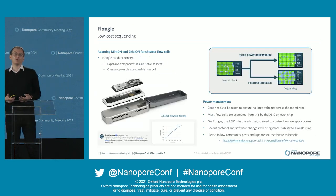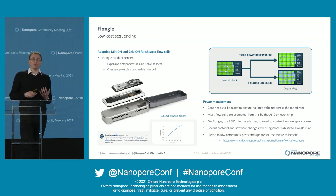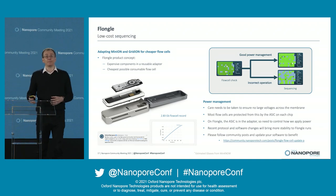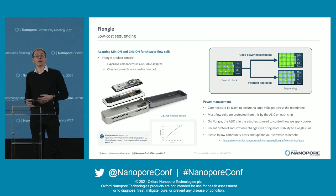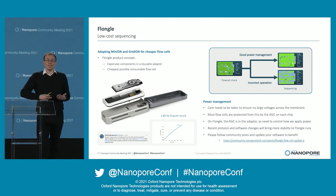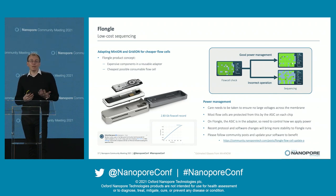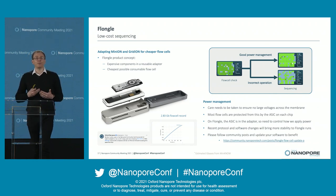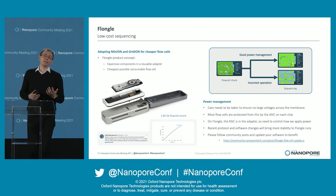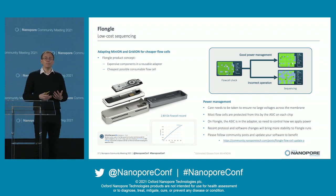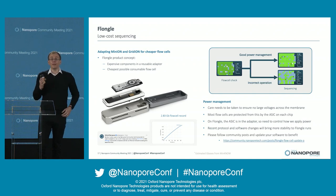From the big to the small — let's talk about Flongle. Flongle is a pretty simple product concept: take all of the expensive components in the flow cell and put them in the instrument — in this case, an adapter that connects to either a MinION or GridION. The flow cell itself is then very cheap: just plastic, a tiny bit of metal in the electrodes, some water, and some nanopores. While this gives you the cheapest flow cell offering, it does come at a slight trade-off. The connector limit is currently 126 channels, but you can still do an incredible amount of sequencing with 126 channels.